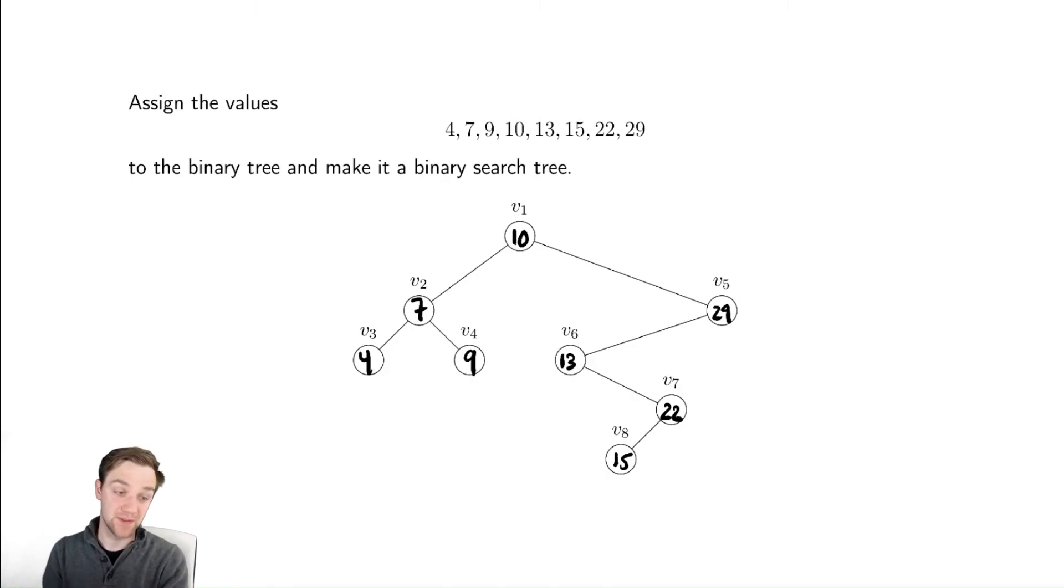And now let's just verify that we've satisfied the property. 10 is bigger than 7 and it's bigger than 4. 9 lies between 7 and 10, so that seems good. On the right, 29 is bigger than 10. Everything over here is less than 29. 13 is less than 29. 22 is greater than 13. And 15 is between 22 and 13. So all of this seems to check out. So this is a valid way to assign these values.